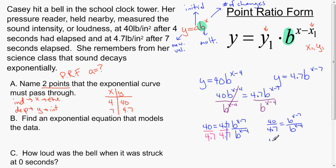I can use the division property of same bases on the right side of this equation and just subtract the exponents down. So 40 over 4.7 equals b to the x minus 7 minus the quantity x minus 4. When I subtract the x minus 4, I've got to think of it as a quantity, which gives me x minus 7 minus x plus 4. The x's cancel, and negative 7 plus 4 is negative 3. So it's b to the negative 3.